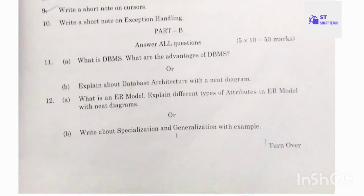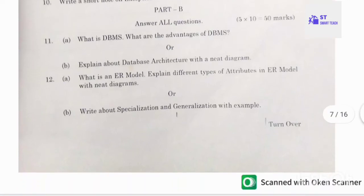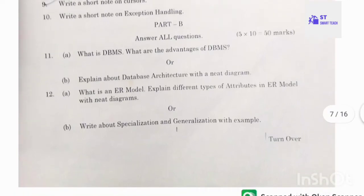Twelfth question: what is an ER diagram? Explain different types of attributes in the ER model with neat diagrams. The alternative question is: write about specialization and generalization with examples. These two questions are from the second unit; you need to answer one of them.